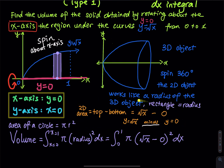For the 2D area we use the top curve minus the bottom curve: √x minus 0. When you spin this 360 degrees, that distance becomes the radius of the three-dimensional object. To find the area of a circular cross-section, we use the formula for the area of a circle: π r². So r = √x − 0 = √x.